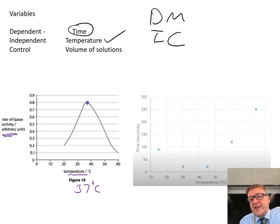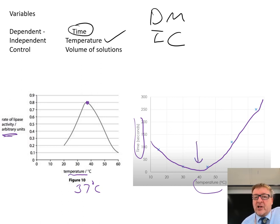The other graph is directly from your results—time in seconds against temperature. You'll have a graph that looks like a curve. You can work out the optimum by where it is at its lowest point.